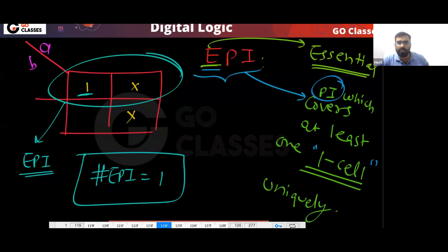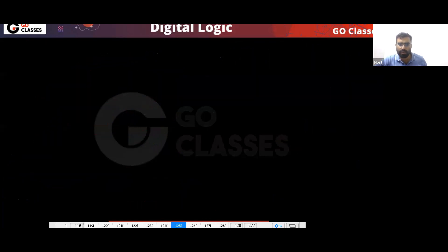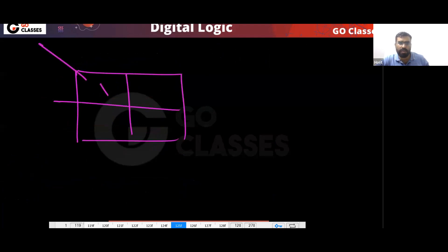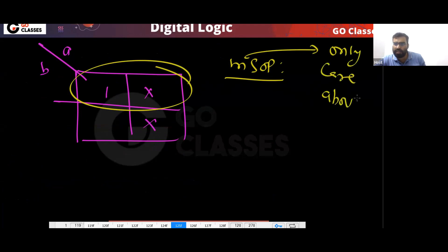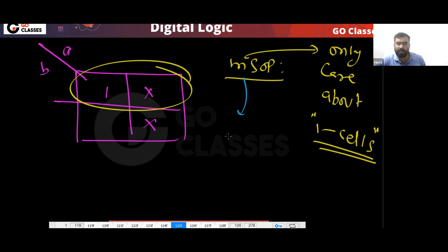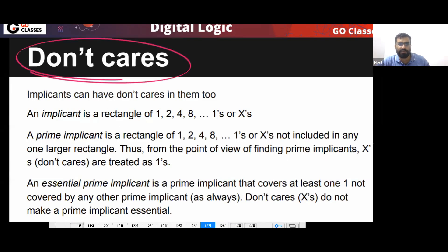How many minimum SOPs will there be for this question? The minimum SOP is unique. When writing minimum SOP, you only care about the 1-cells, not the don't care cells. So there will be a unique minimum SOP, and that will be b-bar.